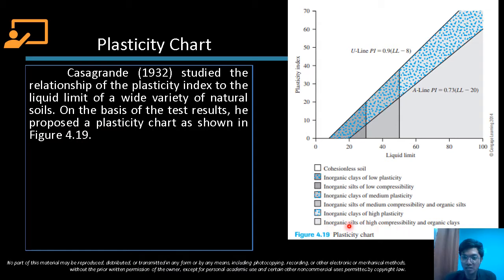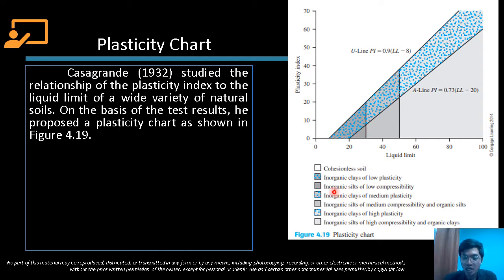One region corresponds to inorganic silt of high compressibility and organic clay. Another region is for organic clay of high plasticity. Another is inorganic silt of medium compressibility and organic silt. Then there is inorganic clays of medium plasticity. There is also inorganic silt of low compressibility, and inorganic clay of low plasticity.